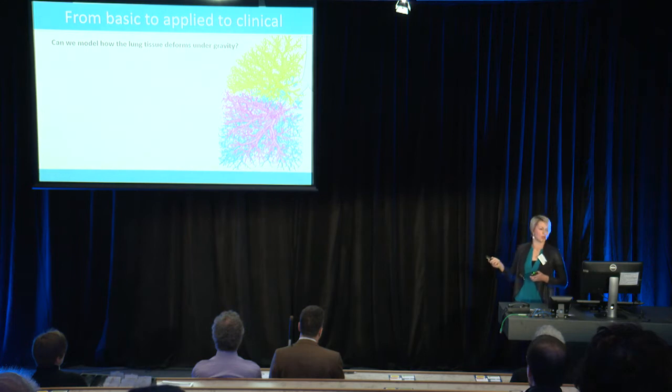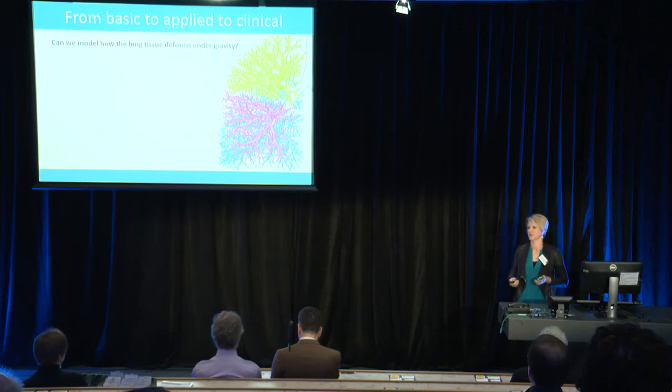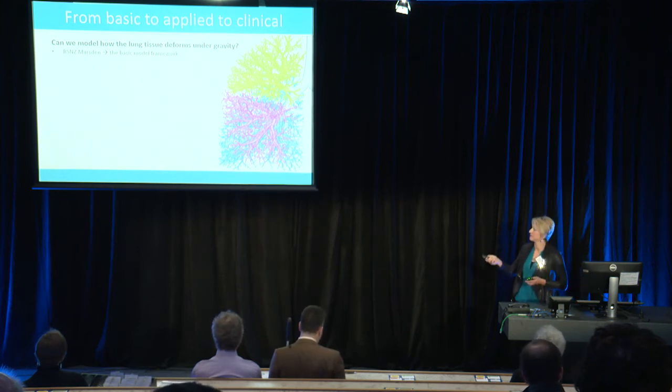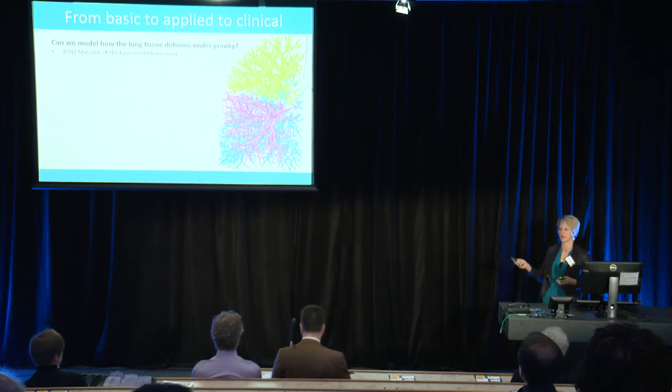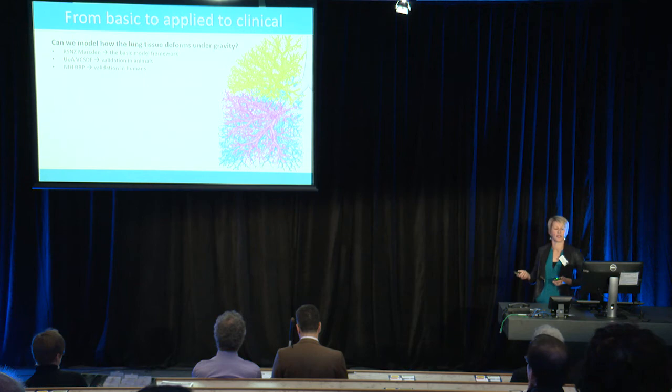This little journey I'm talking about: we start off with questions where there doesn't appear to be any specific applied outcome — such as how can we model how the lung tissue deforms. Being a basic science question, this was supported by Marsden, which gave us the ability to develop the basic model framework. Then we go on to validation in animals, validation in humans, applying this model in patients who are invasively or non-invasively ventilated, and then through international connections to understanding how different types of ventilation strategies can be optimised for individuals to improve their clinical outcomes.